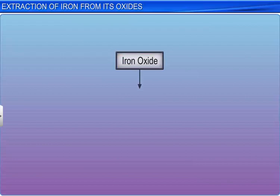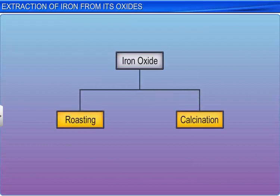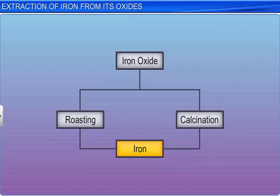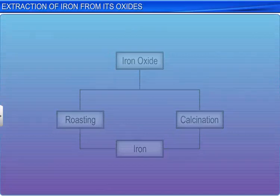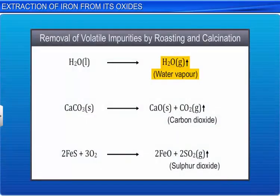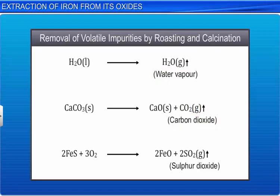Iron oxide, the ore from which iron is to be extracted, is concentrated by roasting or calcination so that water gets eliminated as vapor, carbonates get decomposed to release carbon dioxide, and sulphide gets oxidized to sulphur dioxide.